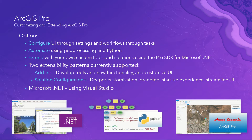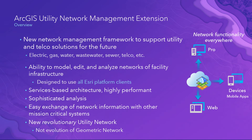The picture in the lower right actually is ArcGIS Pro, but many ribbon buttons are gone because it's customized for a utility company and their startup experience. That gives me an opportunity to talk about the ArcGIS Utility Network Management Extension — a new management framework to support utility and telco solutions for the future: water, electric, gas, and so on. It gives you the ability to model, edit, and analyze networks of facility infrastructure. These are complex networks.